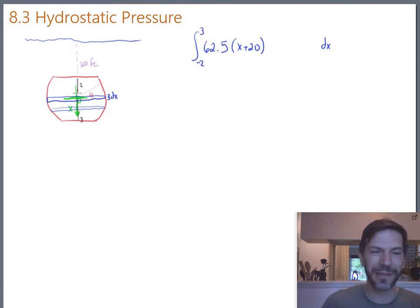Again, it's a little bit funky that our coordinate system has x pointing downward. But it's okay, it works. And it works well for what we need. So we will integrate from a depth of 18, but in our coordinate system, a depth of negative two, or an x of negative two, to an x of positive three.